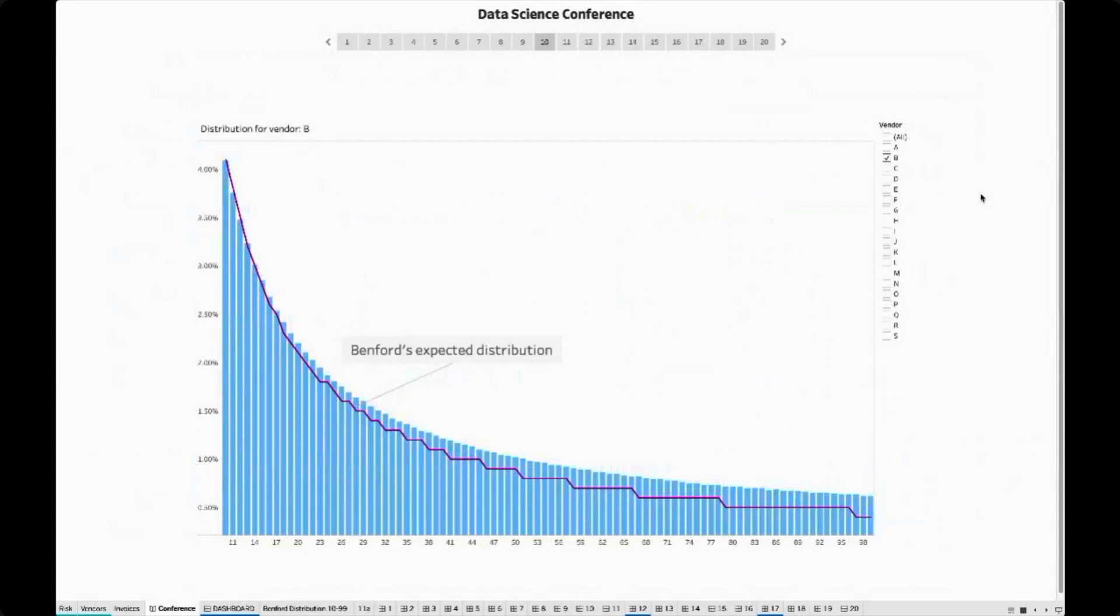Now let's go into Tableau and look at two sample data sets. Here, first, we have the vendor B. And the invoices confirm pretty much to Benford's law. The purple line represents Benford's expected distribution. So on the x-axis, we have the numbers 10 to 99. And on the y-axis here, we have the frequency of the observed distribution in percentages. And as we saw before, the expected distribution starts at around 4% here, and then it goes lower and lower. In data science, this is one of the most important visualization types. And it's called a histogram. A histogram has a categorical data type on the x-axis. In our case, the x-axis consists of bins ranging from 10 to 99. And on the y-axis, we have a measure.